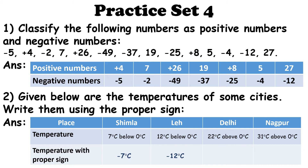Delhi's temperature is 22 degrees Celsius above 0. Since the word 'above' is used, it indicates positive, so we write it as plus 22 degrees Celsius. The last city is Nagpur — its temperature is 31 degrees Celsius above 0, so using the plus sign, we write plus 31 degrees Celsius.